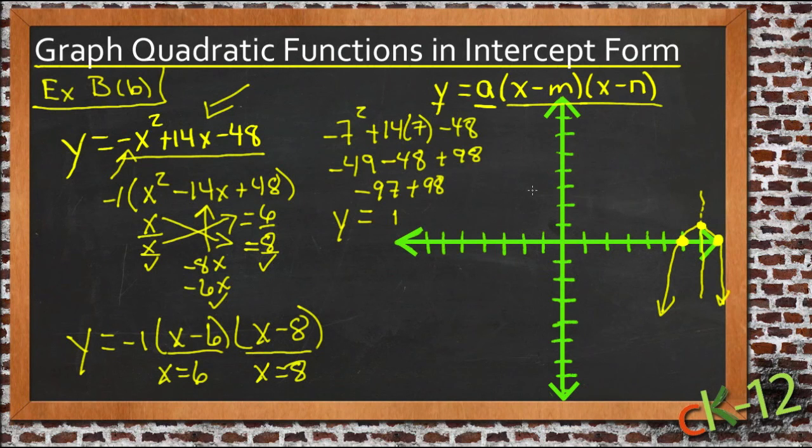Now we can verify that by looking at the original function. The original function had this negative initial term, which is what caused that extra step we had to take, pulling out that 1. Any time you have a negative initial x squared term, your parabola is going to be a down parabola. And you can see that that's exactly what turned out here.